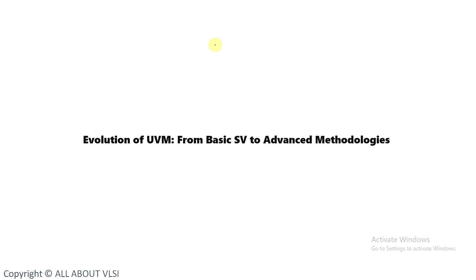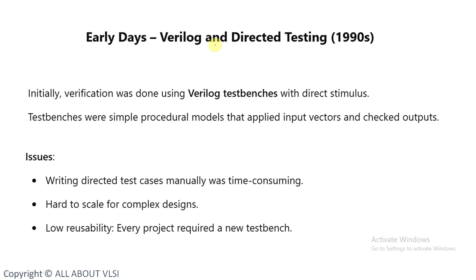Let's see the basic evolution of UVM from SV. In the early days, verification was done using Verilog test benches by applying direct stimulus — procedural models applied as input vectors and checked outputs. The issues with directed test benches built using Verilog were: writing them manually was time-consuming, hard to scale for complex designs, and reusability was very low. Every project required a new test bench.